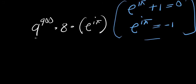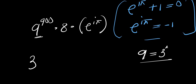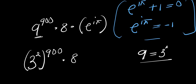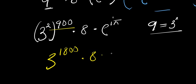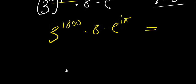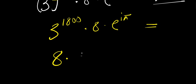Remember that 9 is a perfect square — 9 is 3^2. So this would be 3^2 to the power of 900, times 8 times e^(iπ). Multiplying the exponents, this gives 3^1800 times 8 times e^(iπ). So our answer is 8 times 3^1800 times e^(iπ).